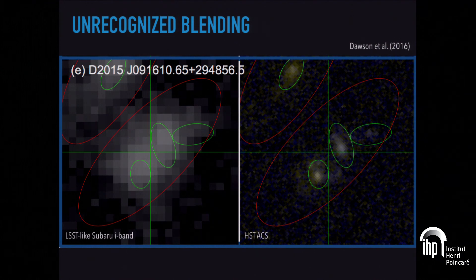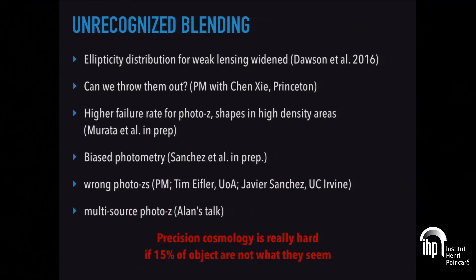So what can you do about this? Actually, first of all, how important is that? I sort of gave away the key message here. Already, 15% of the objects in a ground-based Subaru-like survey that goes to magnitude 27, which is the characteristics of LSST, 15% of those objects will have a neighbor near enough that you can't distinguish them. The consequences of this is there's an extended or a broadened ellipticity distribution, which is bad for cosmic shear. There's also a question whether we can throw them out, diagnose this somehow. This is something I investigate with a senior student.